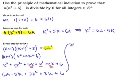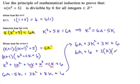Go up here. We have 6a plus 3k squared plus 3k plus 6. All right. So let's do a little rearranging here. 6a plus 6 plus 3 times k times k plus 1.